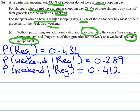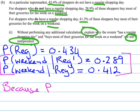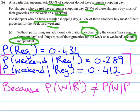What we need to think about is the information we've been given, particularly these conditional probability pieces. The chance of buying groceries on the weekend depends on whether you have a regular shopping day or not — and those probabilities are not the same. Because the probability of a weekend given not regular is not the same as the probability of a weekend given regular, this means the events are not independent.